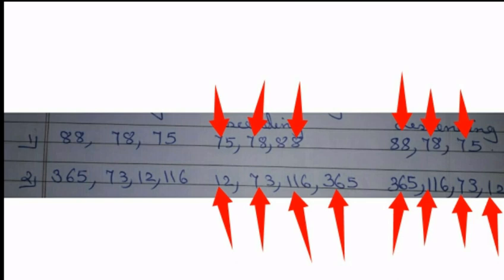So how we will write ascending order? First 75, then 78 and then 88. What we have seen here children? From smaller number to bigger number, we have to write in ascending order. Now we will see descending order. Which is the biggest number in the three numbers? Yes, 88 is the biggest number. Then two numbers remain — 78 and then 75. So in descending order we write from biggest number to smaller number, and in ascending order from smaller number to bigger number.